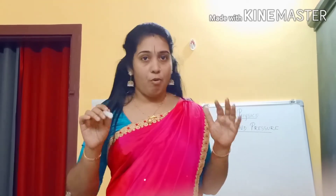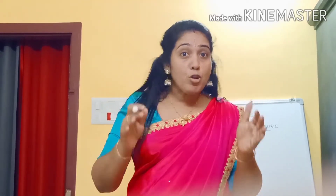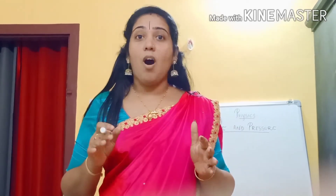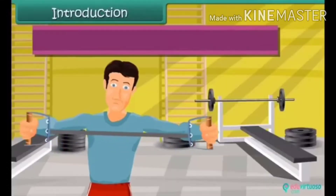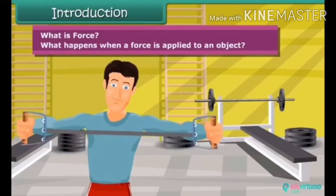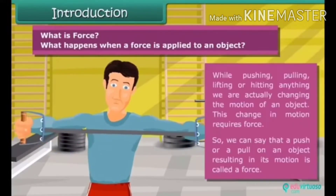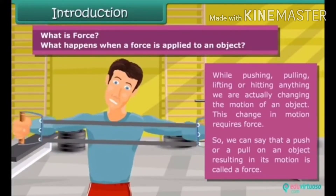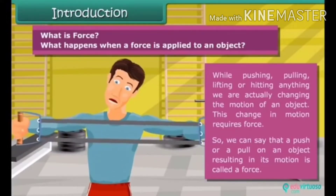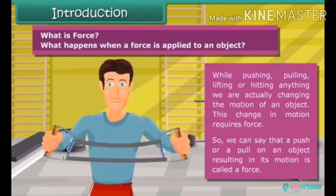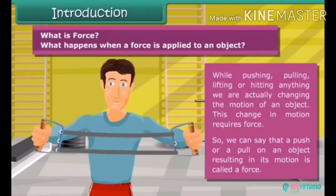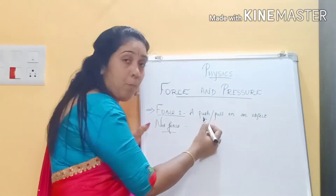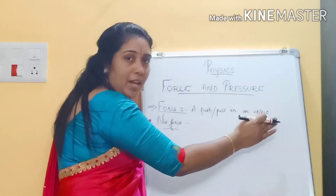What is force? A push or pull on an object is called force. What happens when a force is applied to an object? While pushing, pulling, lifting, or hitting anything, we are actually changing the motion of an object. This change in motion requires force. So we can say that a push or pull on an object is force.